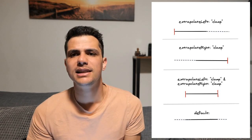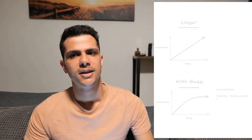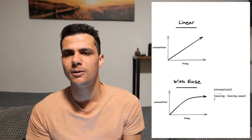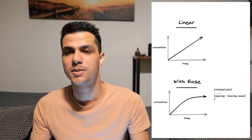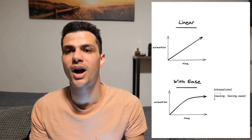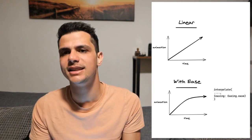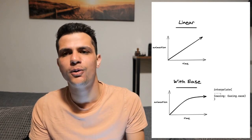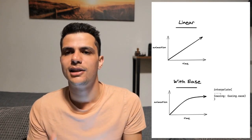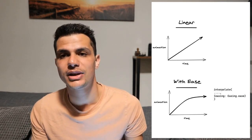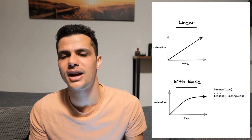Using interpolate leads to animations that are linear, and therefore they don't always look natural. This is why there's another option in the fourth argument of the interpolate function called easing, which allows you to overwrite the animation curve. There are a lot of interesting presets already included in Remotion, so make sure to play around with those.